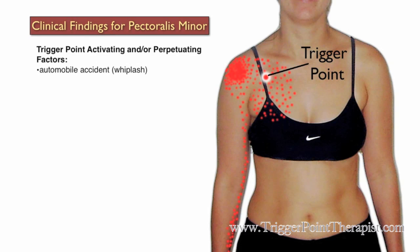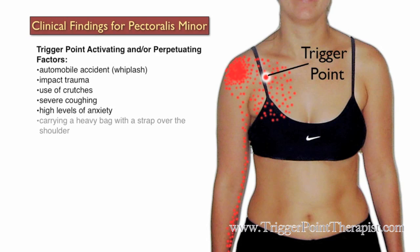Trigger point activating and perpetuating factors for the pec minor include car accidents, impact trauma directly to the chest, use of crutches, severe coughing, high levels of anxiety, carrying a heavy bag with a strap over the shoulder, and the head forward, rounded shoulder posture.